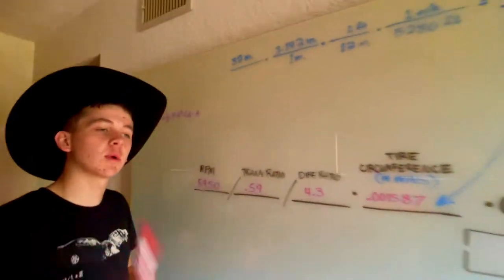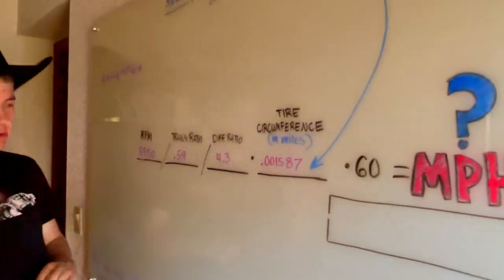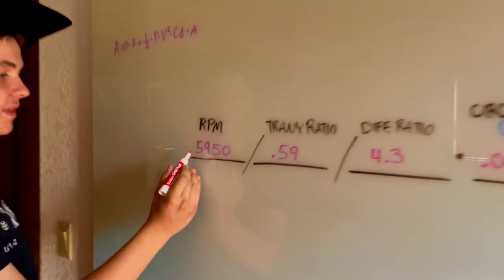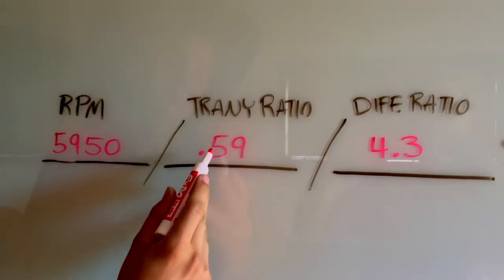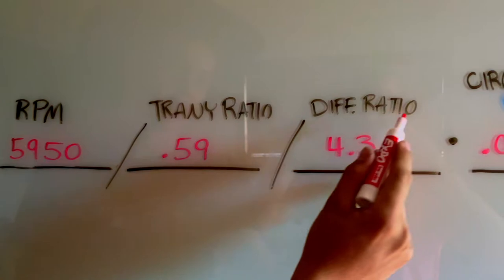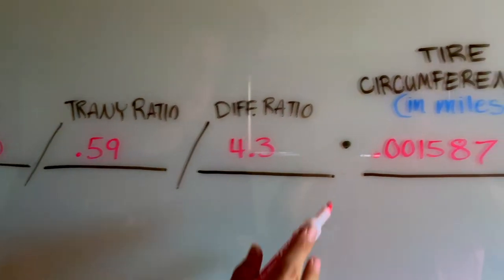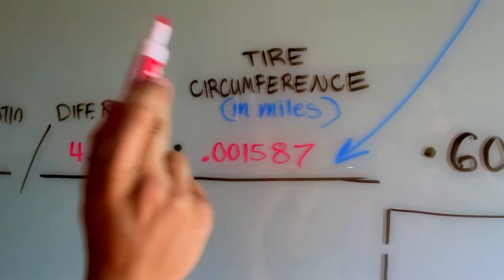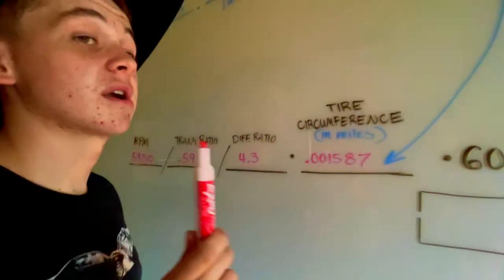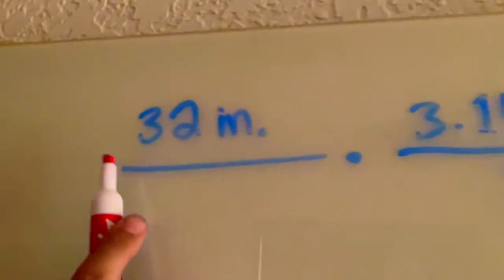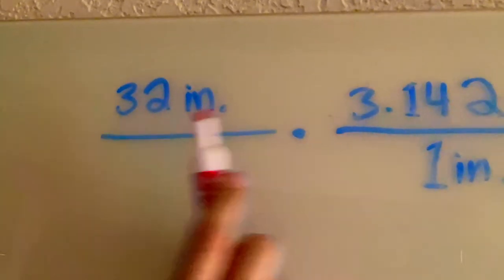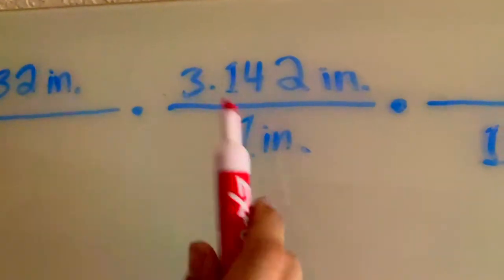So now we have specifications and dimensions from our vehicle that we can plug into this formula to find the top mechanical speed of our rig. We start with RPM 5950, divide it by transmission ratio 0.59, divide that by the differential ratio 4.3, then multiply by the tire circumference in miles. We take 32 inches tire diameter, multiply by 3.14 (pi), and divide by 12 inches to get feet, then divide by 5280 feet to get miles.